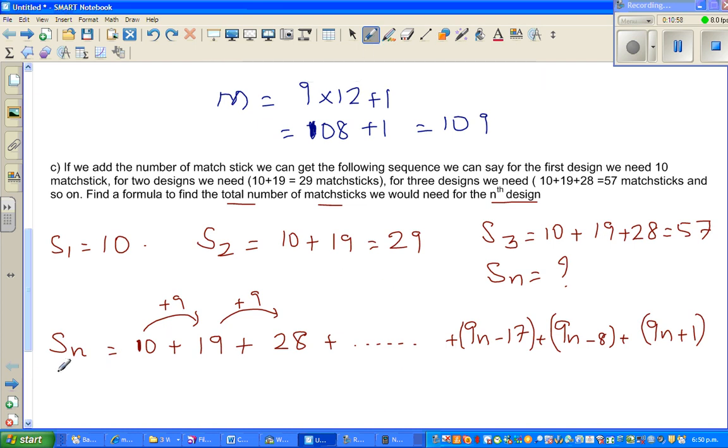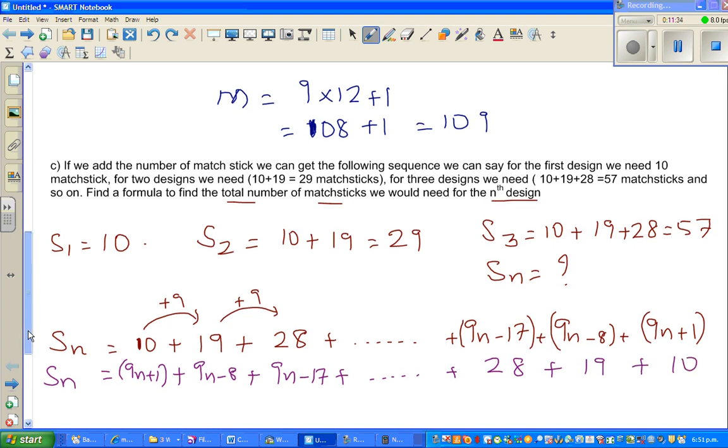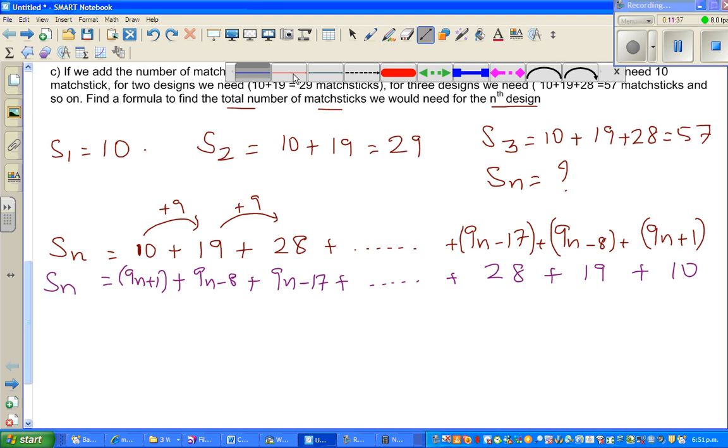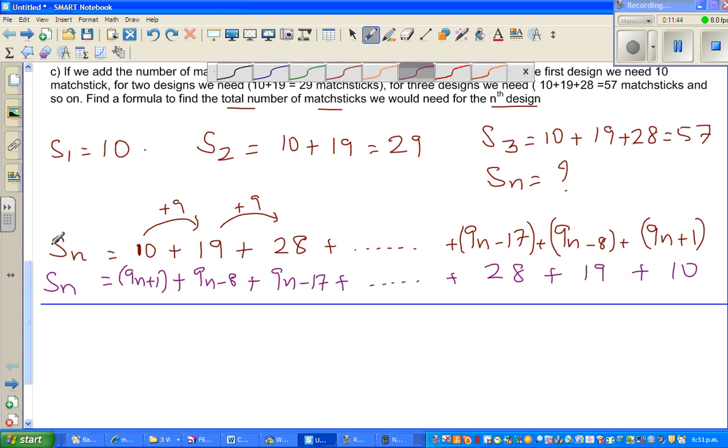Now I'm going to write Sn in the reverse order. This is your first and this is your nth. So if you want to write the reverse order, this will be 9n plus 1 plus this 9n minus 8 plus this, which is 9n minus 17 plus dot dot dot. Writing the reverse order, I'll have to write here 28 plus 19 plus 10. So let me draw a straight line here.